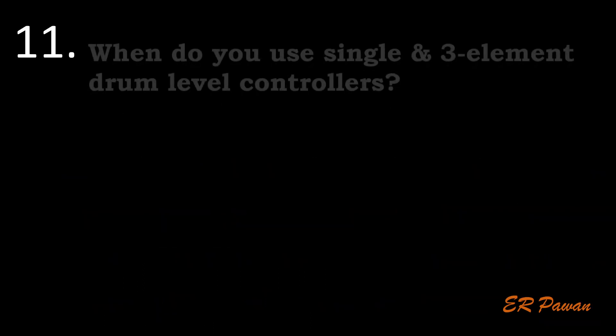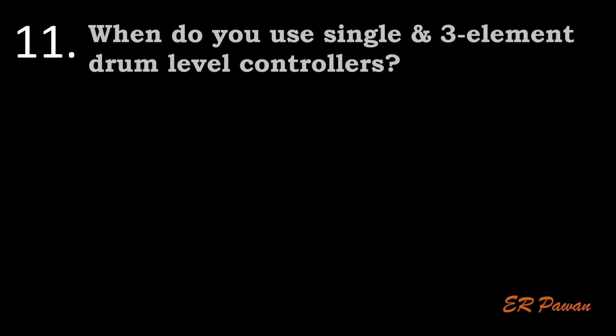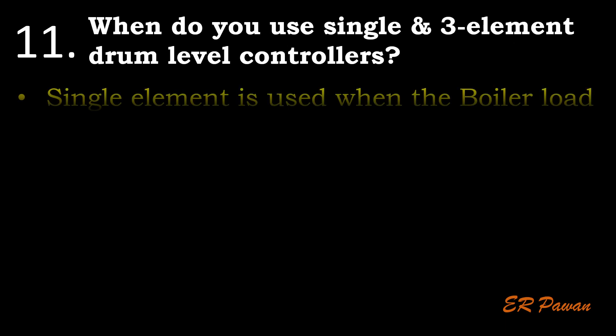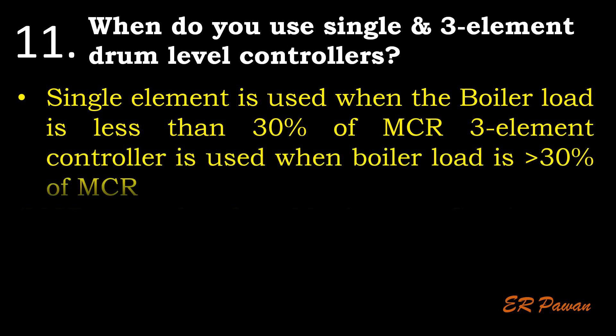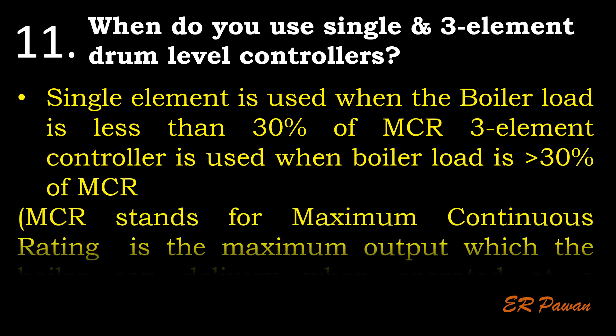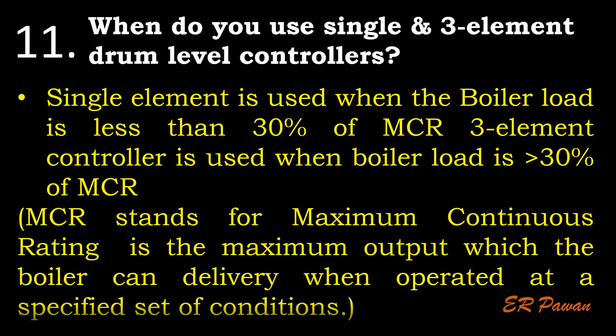Question 11: When do you use single and three element drum level controllers? Single element is used when the boiler load is less than 30% of MCR. Three element controller is used when boiler load is greater than 30% of MCR. MCR stands for Maximum Continuous Rating — the maximum output which the boiler can deliver when operated at a specified set of conditions.